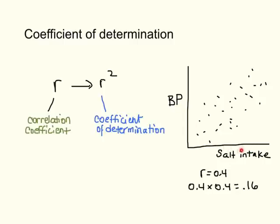And so by simply squaring the correlation coefficient, that will tell you the proportion of variance in salt intake that can be accounted for by blood pressure or vice versa, the proportion of blood pressure that can be accounted for by salt intake. So that's a very helpful measure. So again, 16% of the variance written there for you.